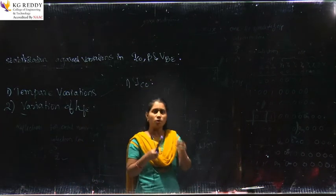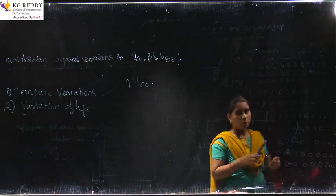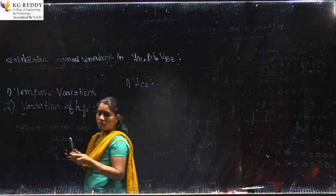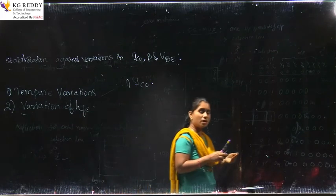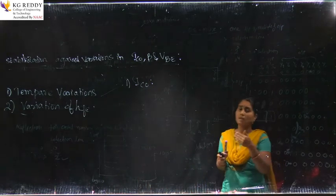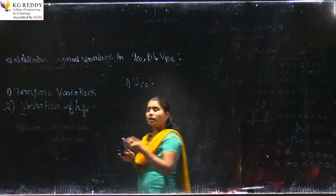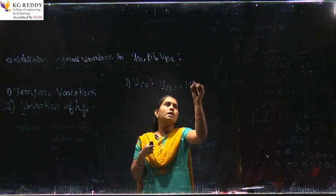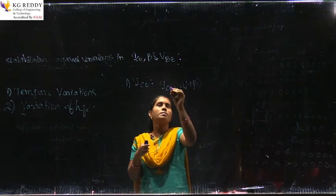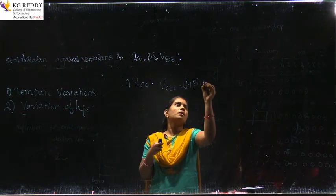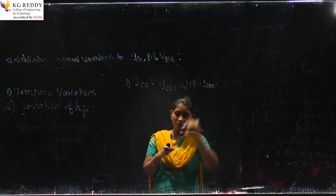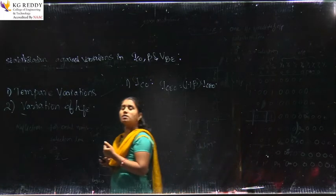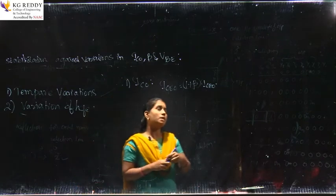Now regarding Ic0: normally the collector current at the output produces heat at the junctions. When heat is produced, the collector current increases. As the collector current increases, there will also be an increase in minority carriers. This minority carrier current is normally written as Ic0 equals 1 plus beta times Icb0, where Icb0 doubles for every 10 degrees rise in temperature.